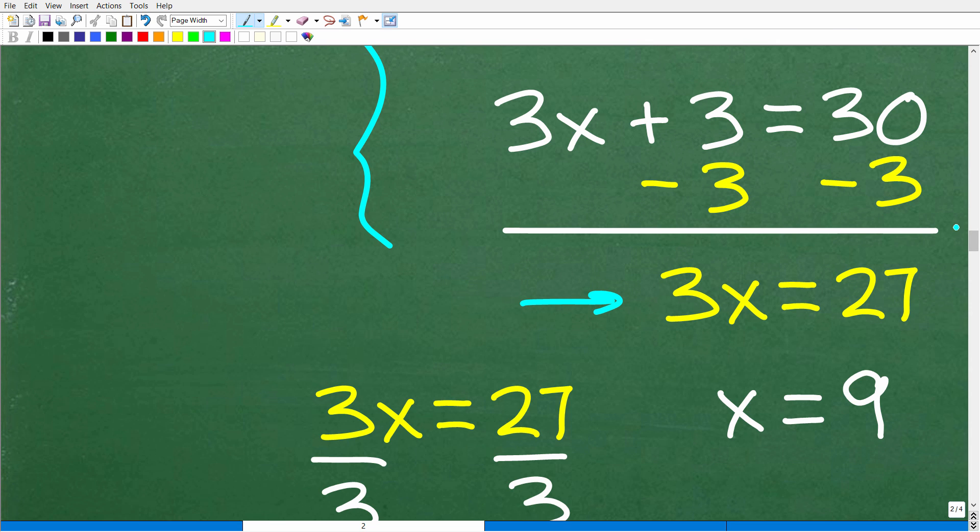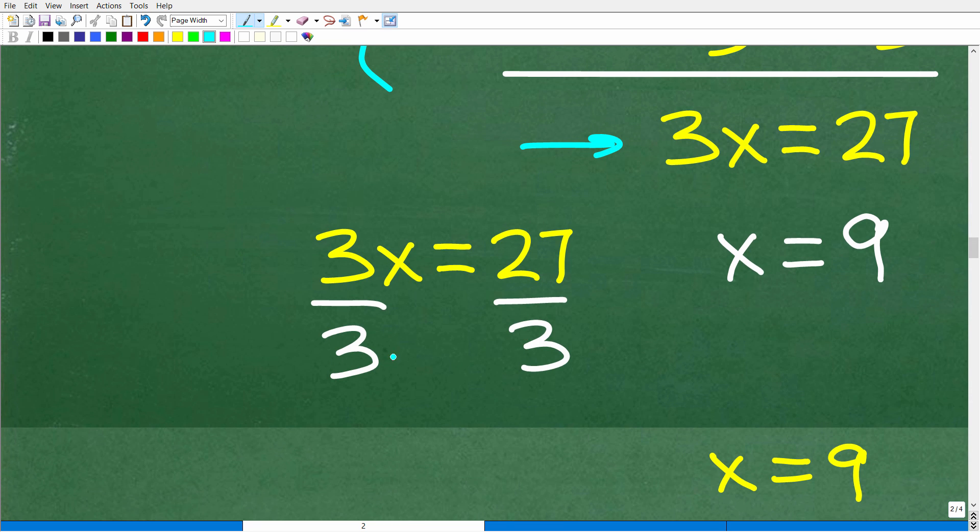So here, after subtracting 3 from both sides of the equation, I have 3X is equal to 27. So to solve for X, all I have to do is divide the equation, both sides of the equation, by 3. And I get X is equal to 9.